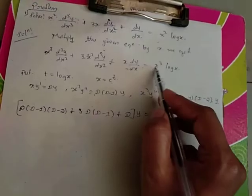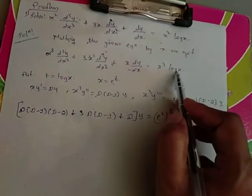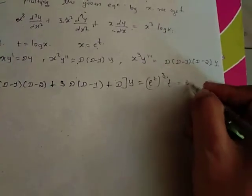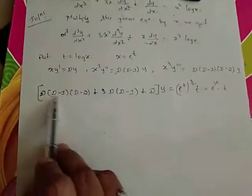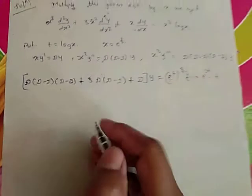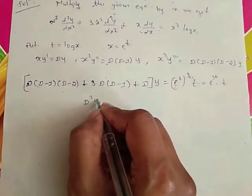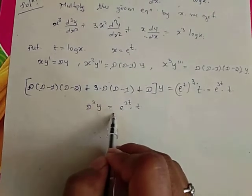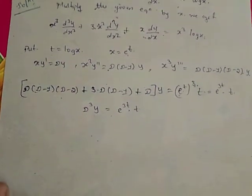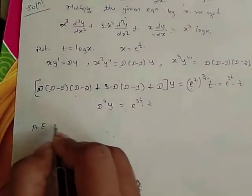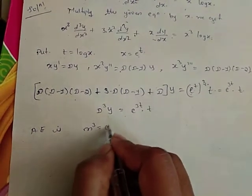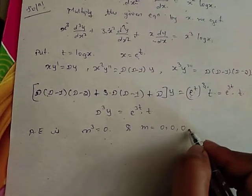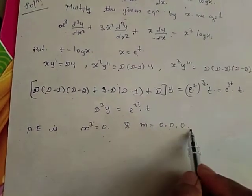On the right-hand side, X = e^T, so X³·log X = e^{3T}·T. After simplifying the left-hand side by expanding and collecting terms, we get D³·Y = e^{3T}·T. Now write the auxiliary equation: M³ = 0. Hence M = 0, 0, 0 (three repeated roots).